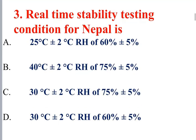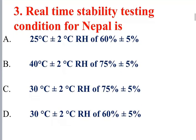The real-time stability testing condition for Nepal is 30 degrees centigrade plus or minus 2 degrees centigrade, with relative humidity of 60 percent.